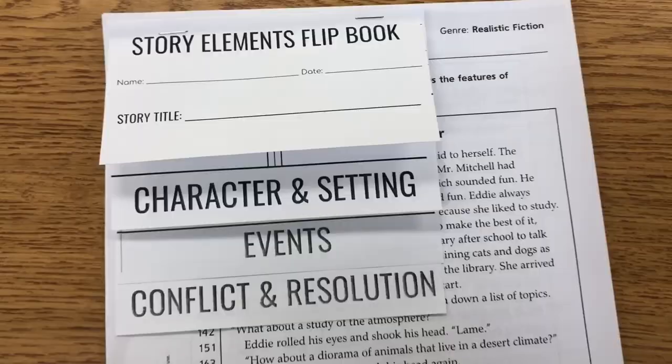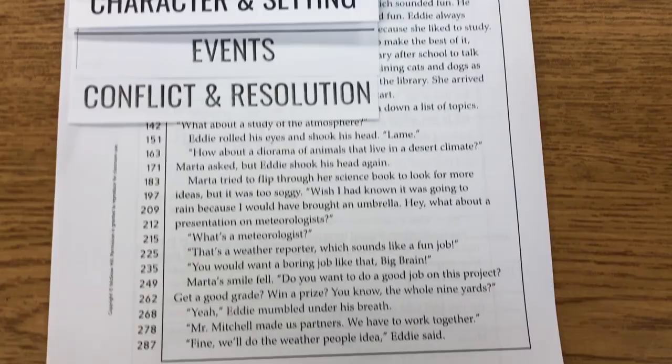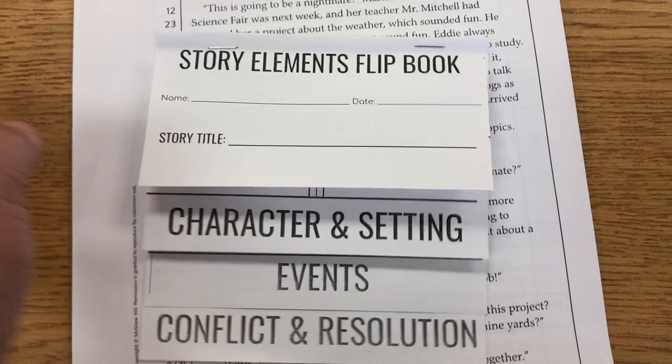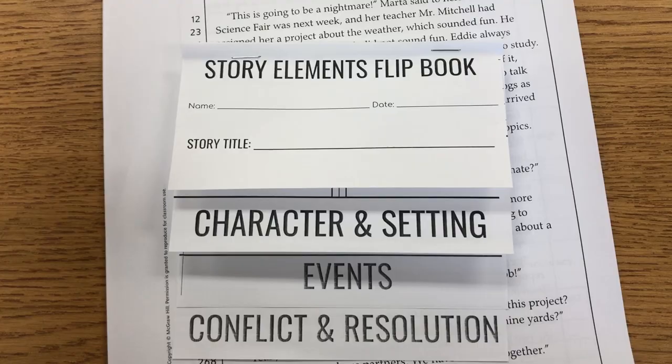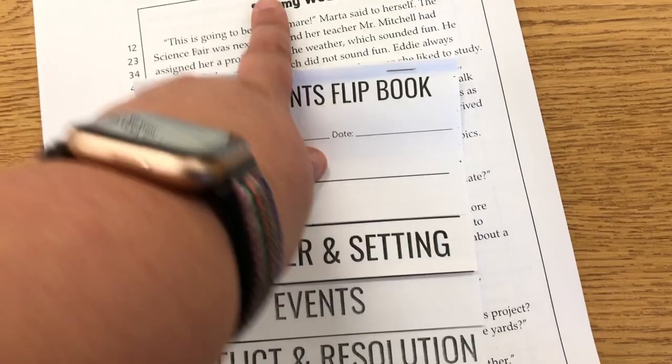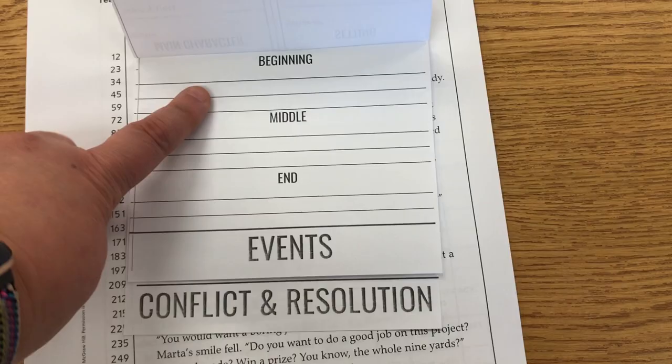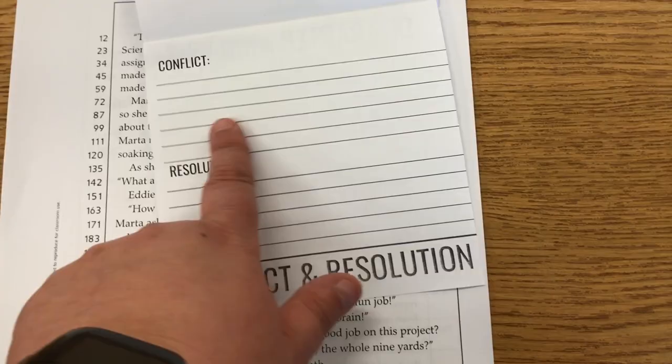For my advanced students, Wonders has these differentiated passages. This is the one for my advanced students — they all have the same passage, stormy weather, but what changes is the word count and some of the vocabulary. They have questions to answer based on the skills we're focusing on for our new unit, Unit 1 Weeks 3 and 4. We have the Florida edition of Wonders, and because we're working on elements of story I decided to use my story elements flipbook. Students write their name, date, story title — in this case Stormy Weather — then add who the main character was, their description, where and when the setting was, an important event from the beginning, middle, and end, and then the conflict and resolution.